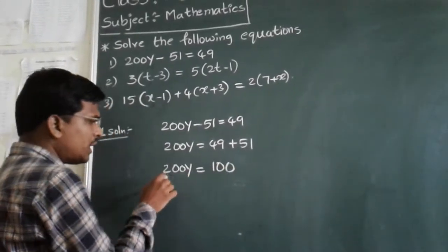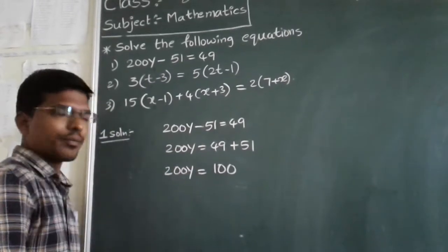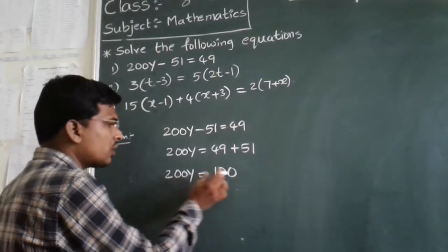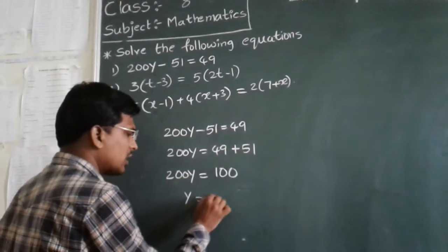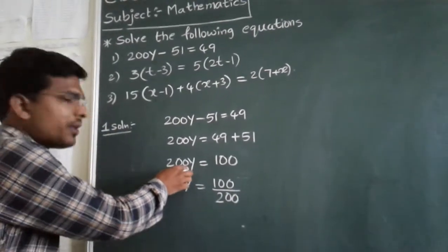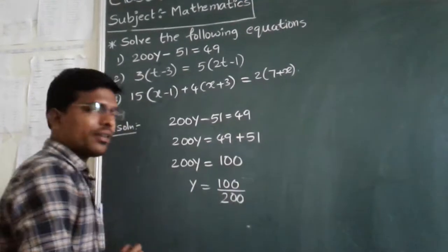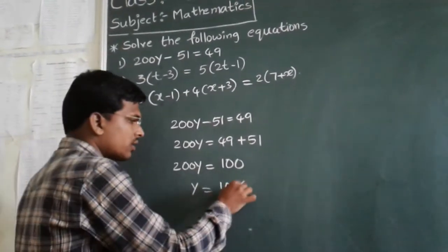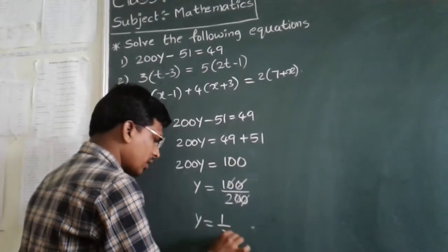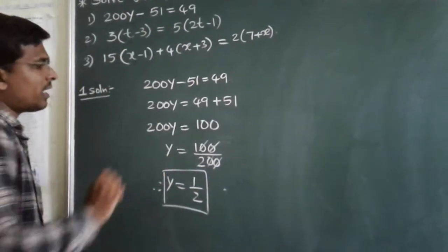In between the constant number and the variable we have a multiplication sign. To find the value of y, I am sending 200 to the right hand side — it will become a divided-by quantity. So y equals 100 divided by 200. Cancelling the zeros, the value of y is 1/2. In a simple way, we can solve these problems.